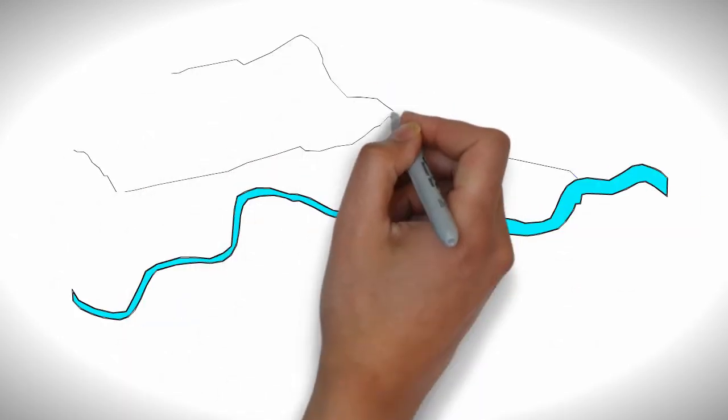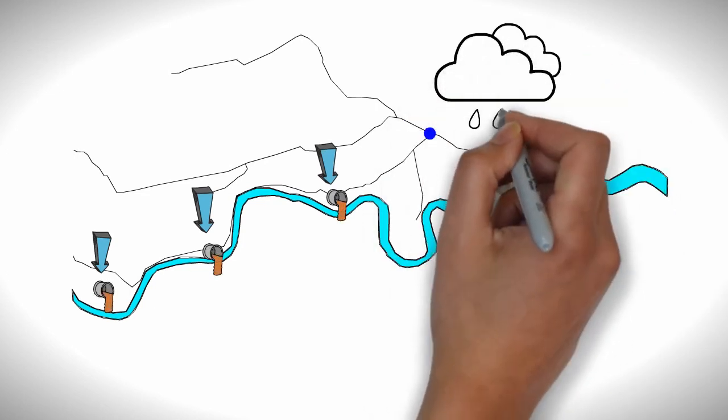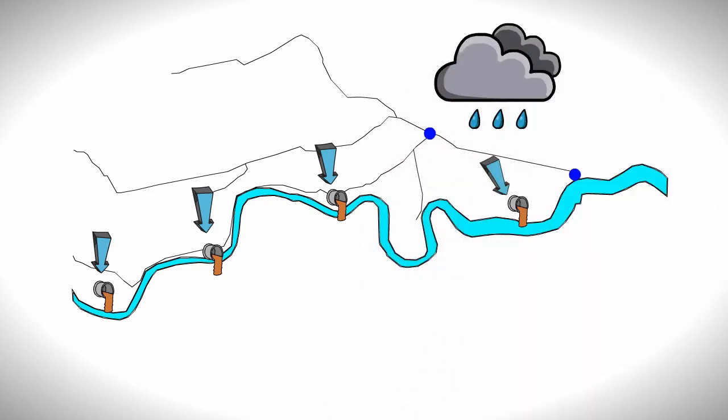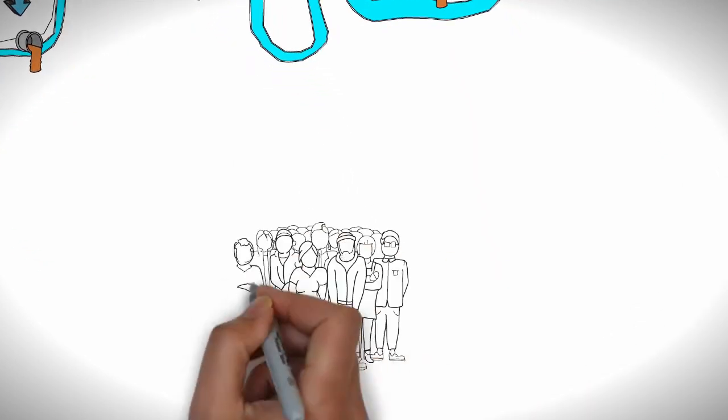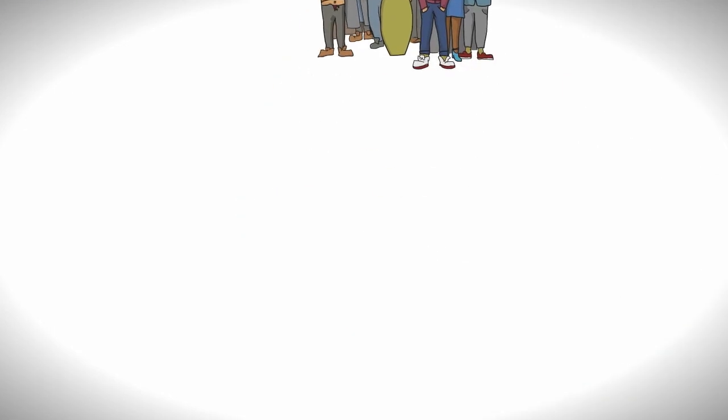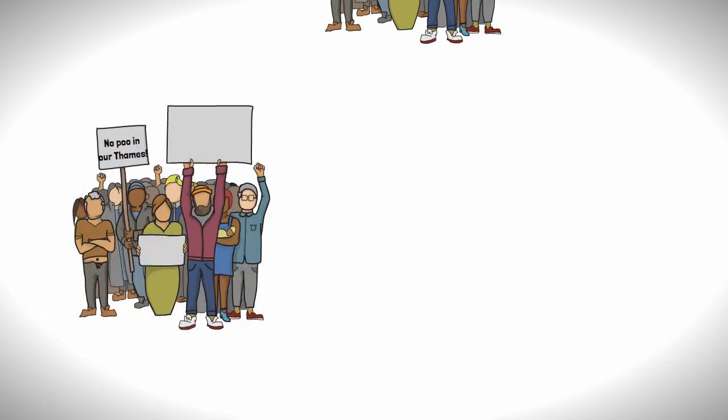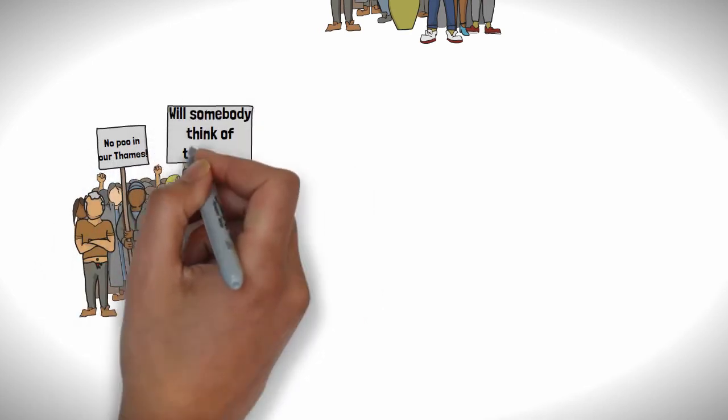These are essentially bits of the sewer network, which allows sewage to be rerouted and discharged directly into the Thames, during storm events when too much rain enters the system for the network to fully handle. As one can imagine, during these times of increased environmental awareness, discharging poo into the Thames is something that would not go down well with the residents of London in the 21st century.